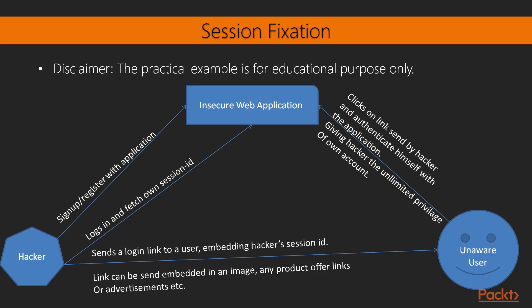The unaware user doesn't know the link was sent by a hacker, and clicks on an advertisement or image. Once he clicks on it, he is taken to the authentication page and authenticates himself with the application. Now once he authenticates himself, he logs in under the same session that the hacker has the session ID for — giving the hacker unlimited privileges over the unaware user's account.